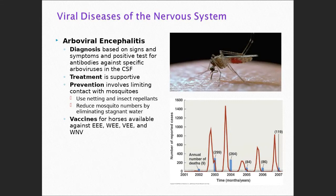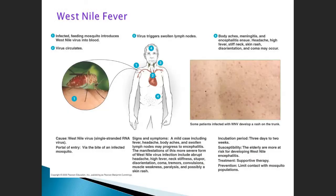West Nile is a problem in Texas and people just don't think about it enough. The mosquito takes a blood meal, the virus gets into the body and brain, causing body aches, meningitis, encephalitis, high fever, stiff neck, and rash. It can be hugely problematic, especially for the elderly. We should always worry about the elderly.